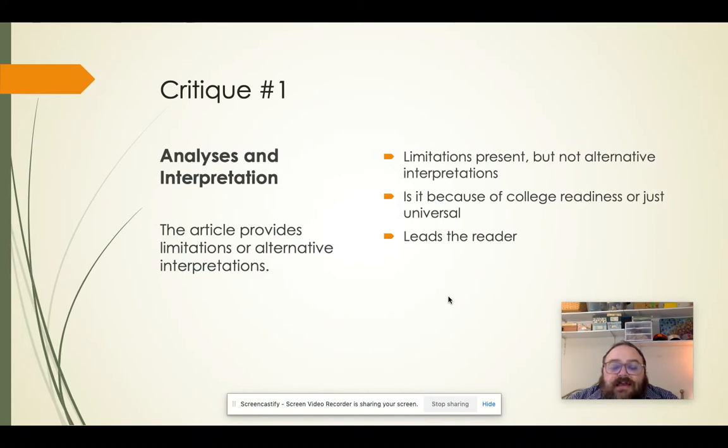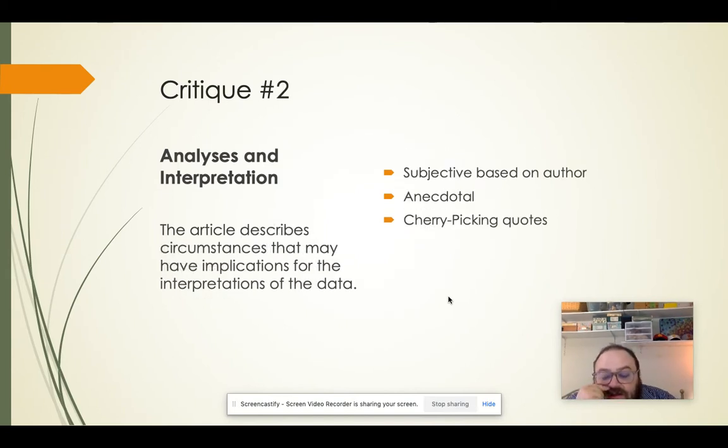Also, it goes back into the same similar situation about the other articles, where are the problems that they mentioned universal to everybody who's going through college readiness, getting all students going to that phase? Or is it only in particular to the students? It seems like they're leading the reader in that sense. And it's kind of like what I'm going to get into in the second critique, a little bit of cherry picking.